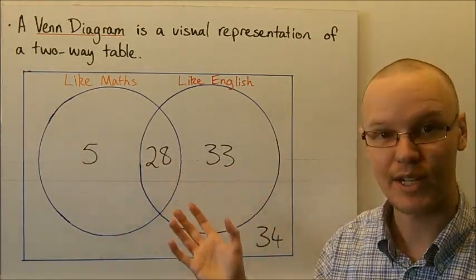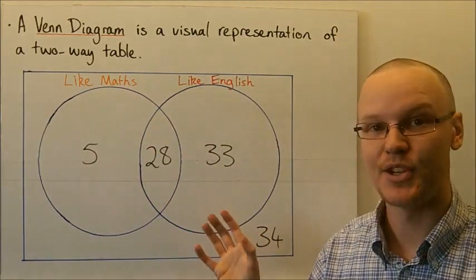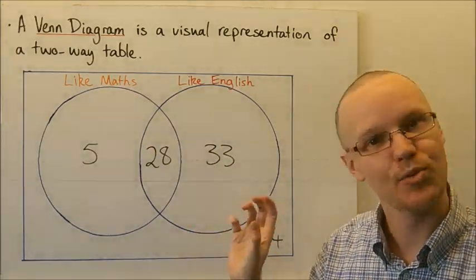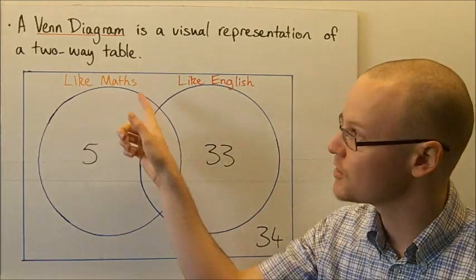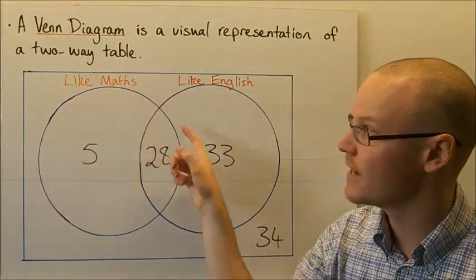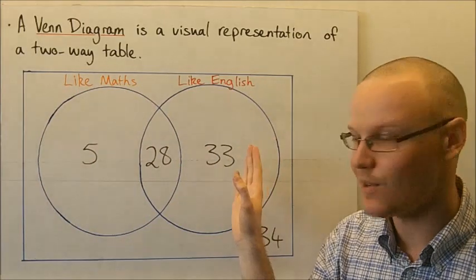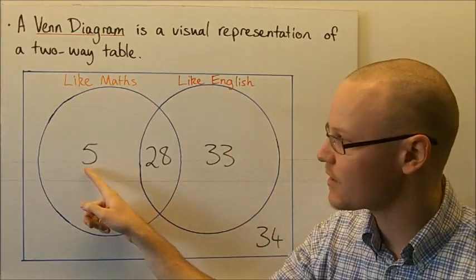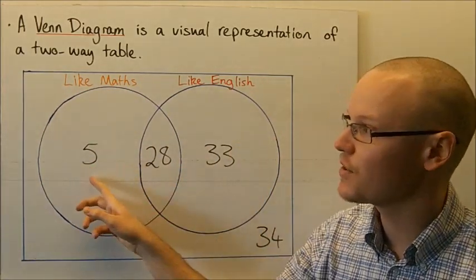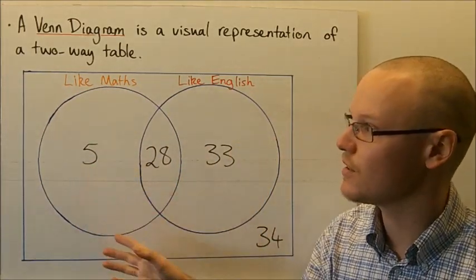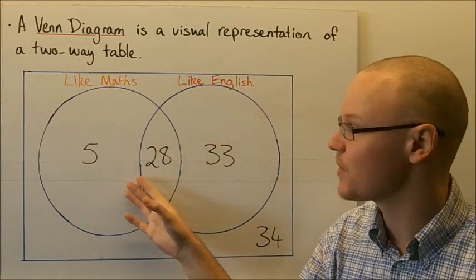To calculate probabilities from a Venn diagram, we need to work out the total number of students. The total number of students that like Maths, whether or not they like English, is 5 plus 28, so the total number of students that like Maths is 33.